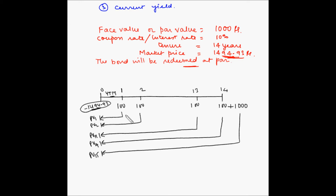The yield to maturity is the rate of return at which the discounted value of the cash inflows is equal to the investment. This calculation reminds me of the internal rate of return calculation discussed in detail in the capital budgeting chapter, so please refer to those videos as well. The negative sign is only symbolic to show that this is an outflow, while the positive signs show these are cash inflows.